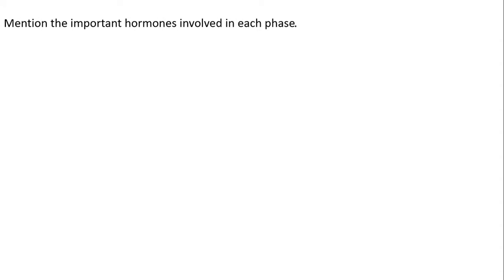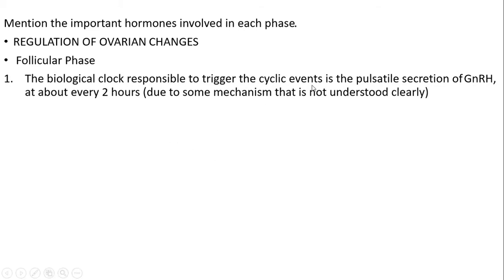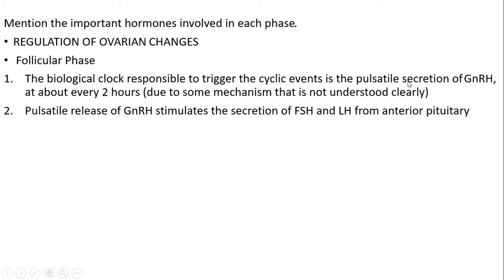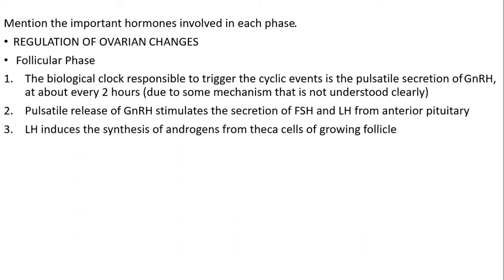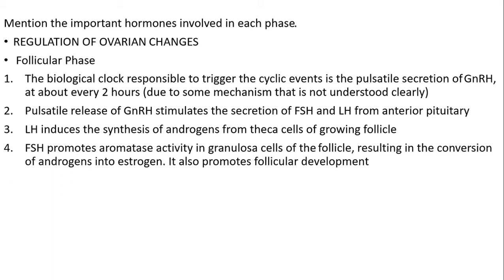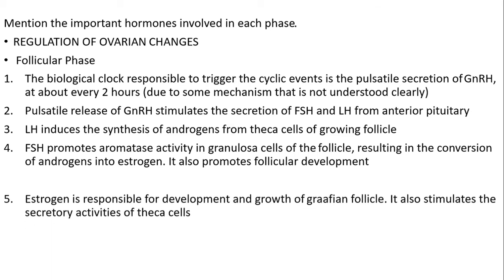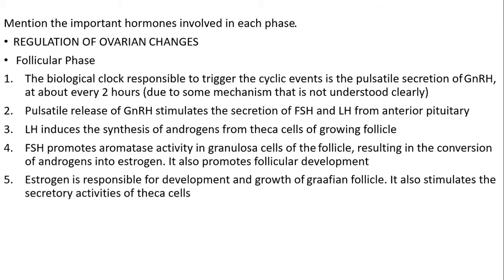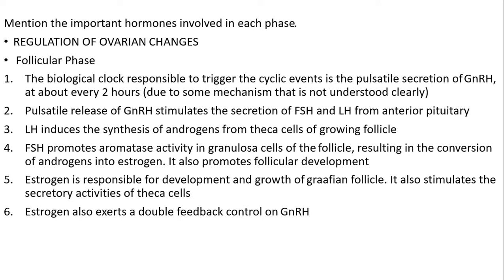Regarding the important hormones involved in each phase — regulation of ovarian changes in the follicular phase: the biological clock triggers the pulsatile secretion of GnRH approximately every two hours. Pulsatile release of GnRH stimulates secretion of FSH and LH from the anterior pituitary. LH induces secretion of androgens from the theca cells of the growing follicle. FSH promotes aromatase activity in the granulosa cells of the follicle, resulting in conversion of androgens into estrogen, promoting follicular development. Estrogen is responsible for development and growth of the Graafian follicle and also stimulates the secretory activities of the theca cells. Estrogen also exerts a dual feedback control on GnRH.